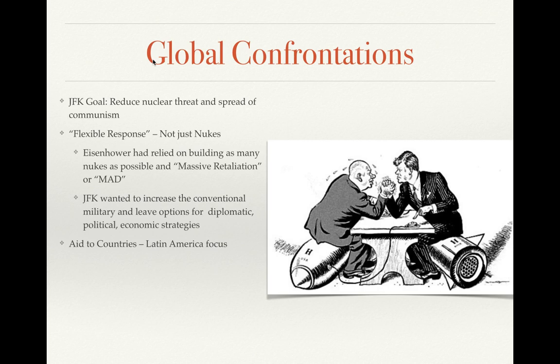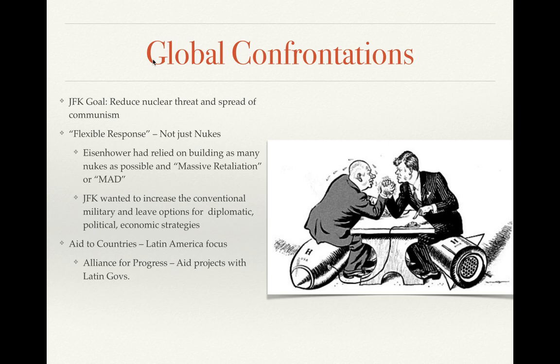Along those lines, Kennedy had a plan to provide aid to countries, focusing primarily on Latin America. You may recall the Marshall Plan — the program following World War II that provided aid to rebuild European economies so they would not turn to communism. Kennedy proposed something similar known as the Alliance for Progress, which would aid projects with Latin American governments to stop them from turning to communism, much like the Marshall Plan did.